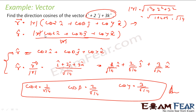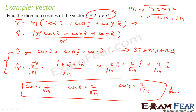What I have done is: I knew that if I get the unit vector, whatever coefficients it has for i, j, and k are nothing but cos alpha, cos beta, and cos gamma. So I wrote this unit vector in two forms: one is the standard form cos alpha i plus cos beta j plus cos gamma k, and the other is what I derived. I compared these two to get cos alpha, cos beta, and cos gamma.